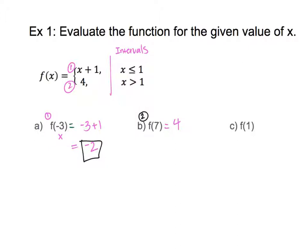For part C, x is 1. The value 1 appears in both intervals, but the first interval says x can equal 1 (less than or equal to 1), while the second says strictly greater than 1. So we choose the first interval and plug 1 into the first equation: 1 plus 1 gives 2. So my output is 2.